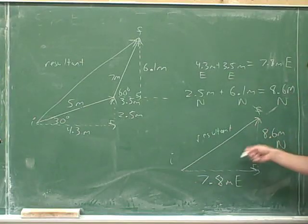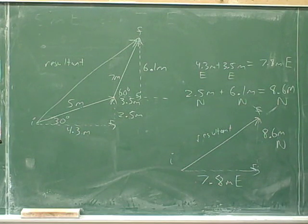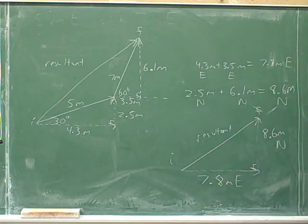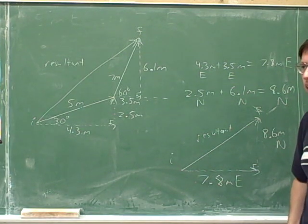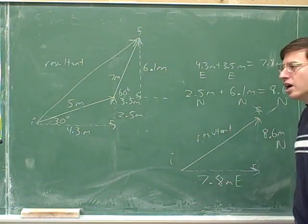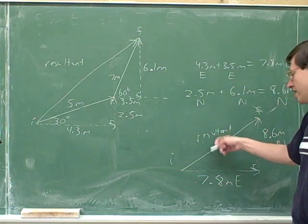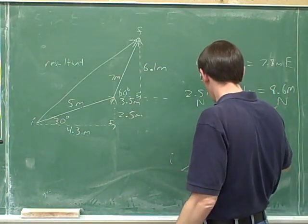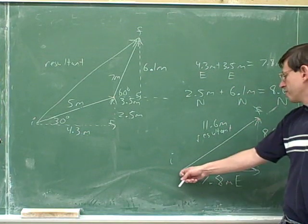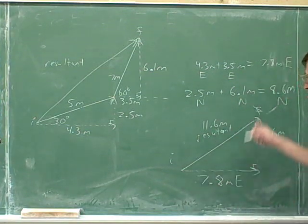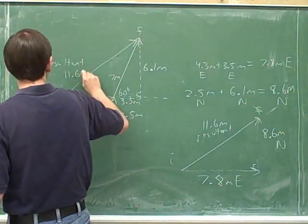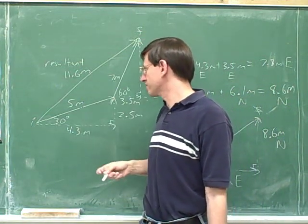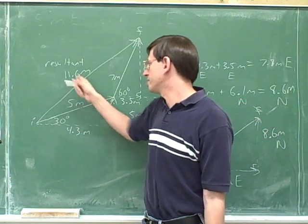This gives us the two components — the horizontal and the vertical components of this resultant vector. What we care about most is the length of this arrow pointing northeast. We can use the Pythagorean theorem to figure out how long this arrow is, and it comes out to be 11.6 meters. So our overall displacement from the initial point to the final point is 11.6 meters. Notice that it's not just 5 plus 7 — you can't add them because these are not parallel vectors. It turns out we're not 12 meters from where we started, but just 11.6 meters.